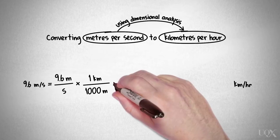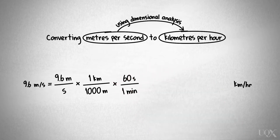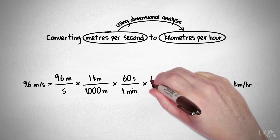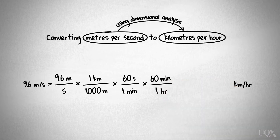Then, we will multiply this by the conversion factor for minutes to seconds, 60. And then finally, the conversion factor for hours to minutes. We can easily solve this by first removing like units: metres, seconds, and minutes.